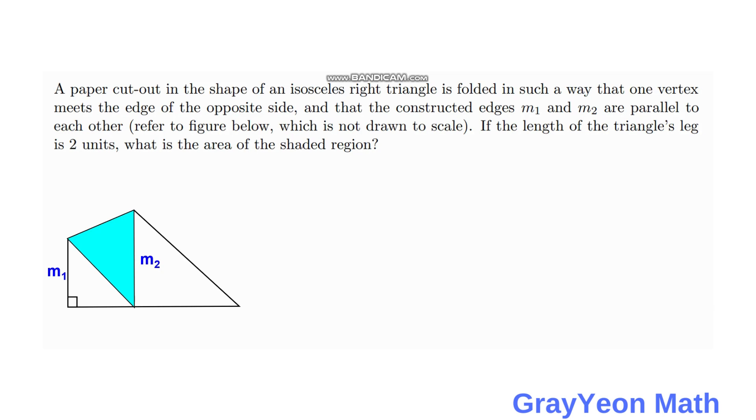A paper cut-out in the shape of an isosceles right triangle is folded in such a way that one vertex meets the edge of the opposite side, and that the constructed edges m1 and m2 are parallel to each other. Refer to the figure below, which is not drawn to scale. If the length of the triangle's leg is 2 units, what is the area of the shaded region?